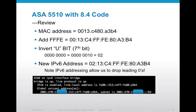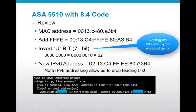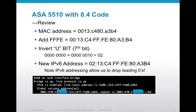So in review, how did we get there? My MAC address originally was 0013C480A3B4. The first thing I did was add FFFE to the middle — pretty simple. The second step was to invert the U-bit, which is the seventh bit. In this case, the first byte of my MAC address was 00, so I just flipped the seventh zero to a one and got a two. My new IPv6 address is 0213C4FFFE80A3B4.